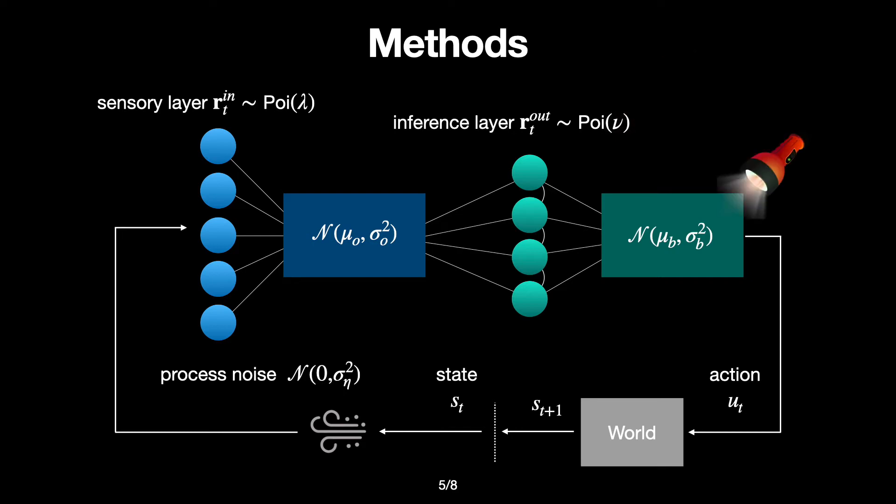The agent decodes the estimated world state using linear projections on the output neural activity and selects the actions that minimize control cost and representation cost, which is defined as the total integrated number of spikes that the neural circuit uses to encode observations and inferences.